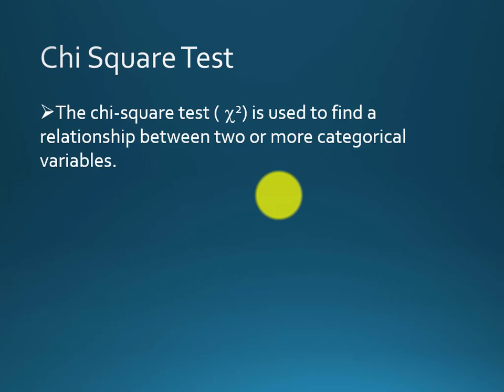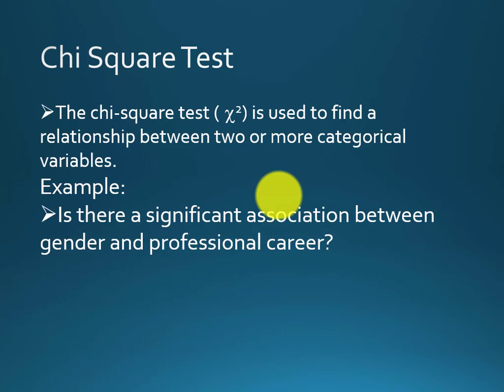The chi-square test is used to find a relationship between two or more categorical variables. For example, is there a significant association between gender and professional career? A researcher may be interested to know whether males are more interested in engineering or females are more interested in a medical career. To find this association, he or she can use the chi-square test.